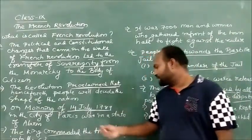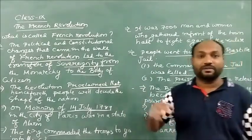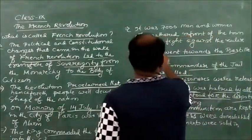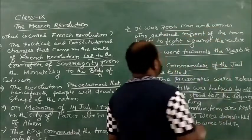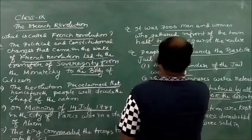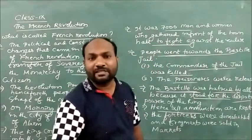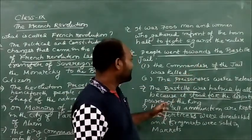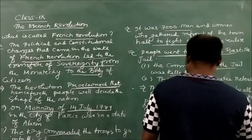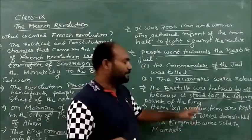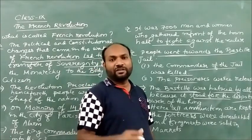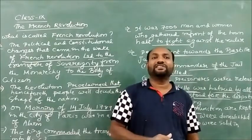There was a rumor that the king would set fire on the people. Nearly 7000 men and women were going towards the towns and cities, fighting against the rulers. They were moving towards the Bastille, which is known as the jail. The Bastille jail was where the king used to keep all his ammunitions, and it stood as a symbol of the power of the despotic ruler.